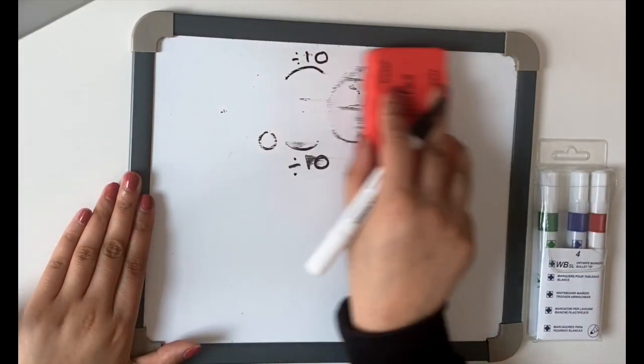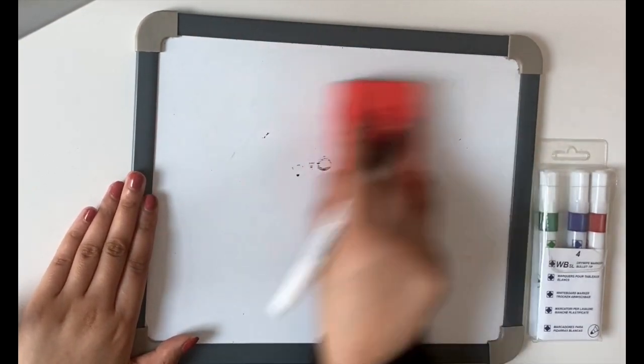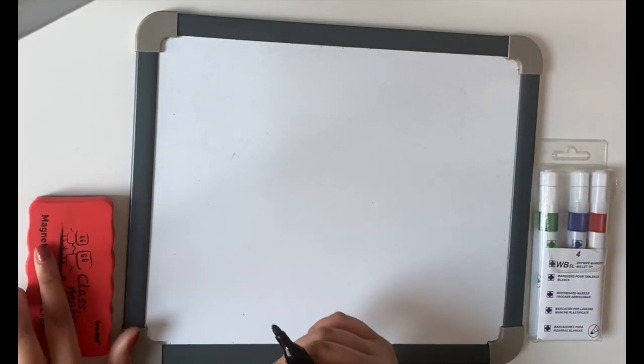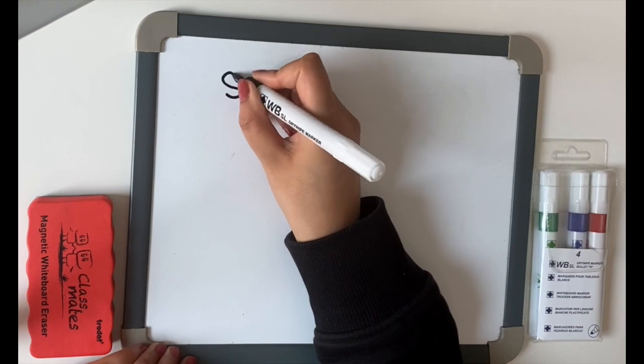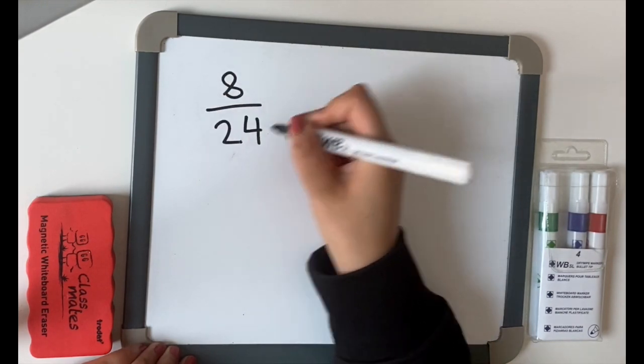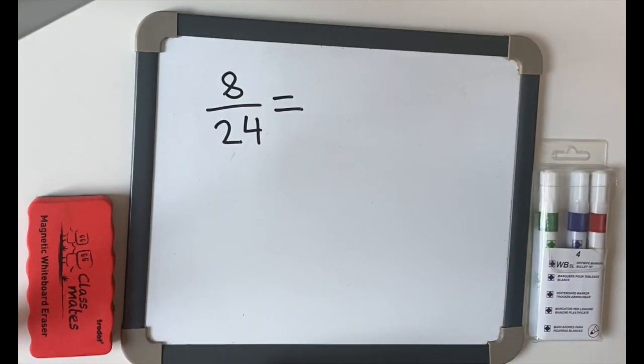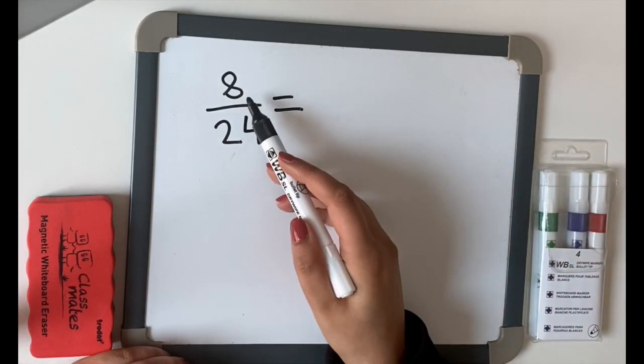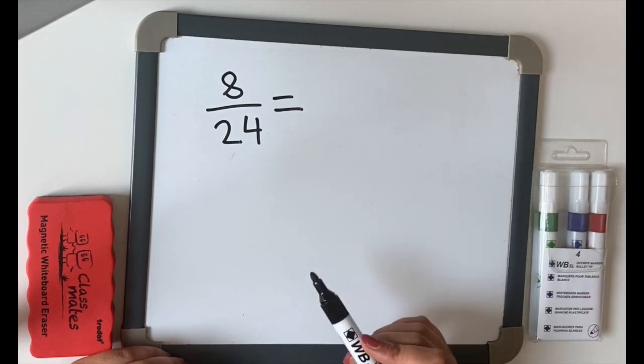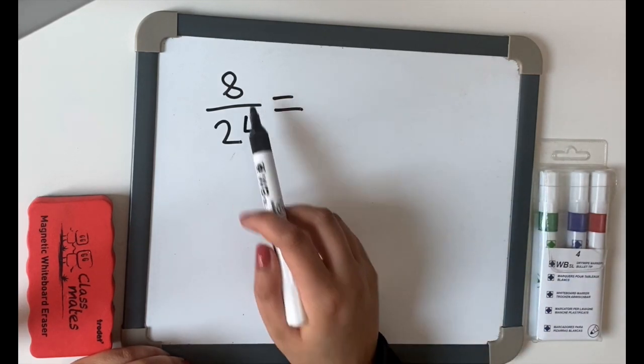Let's have a look at another one. Let's have a look at 8 twenty-fourths. Now the same method applies. We must find out the highest number that will go both into 8 and 24 exactly.